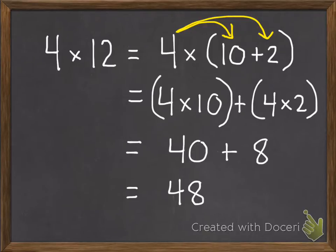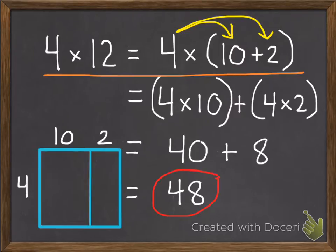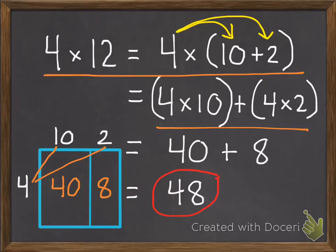We also used area models to help us with the distributive property. So when we did this, we had our 4 times 12, that turns into 4 times 10 plus 2. We broke apart the 12 to 10 and 2. Then, we multiply that 4 times 10, which was 40, and 4 times 2, which was 8. This gives us our third line. We add those together and we get the 48. So here's an example of what we did last chapter with 1 digit by 2 digit.